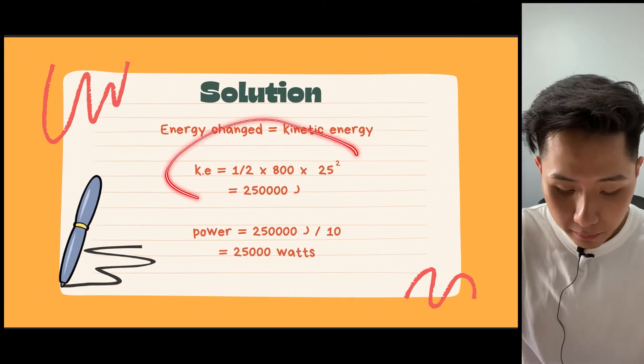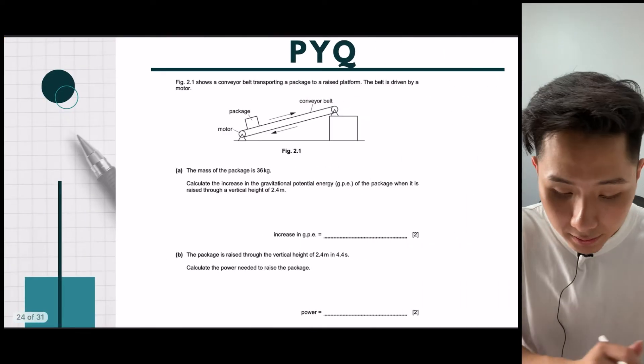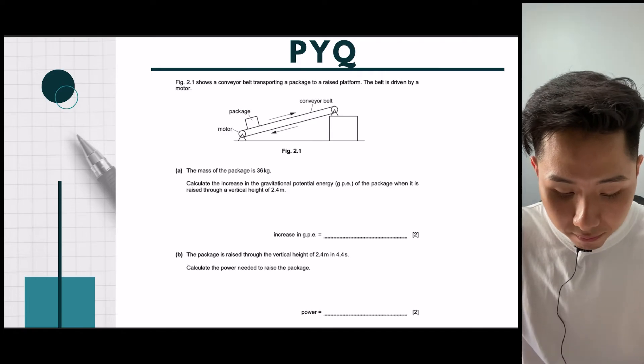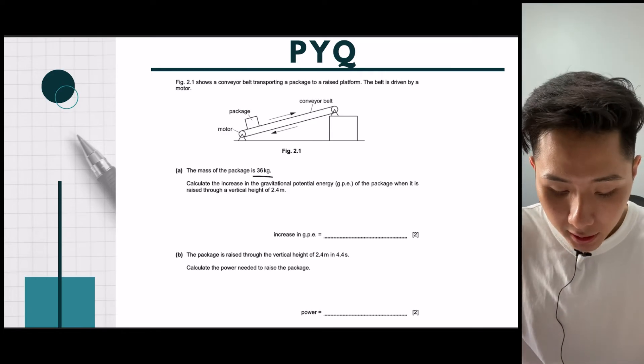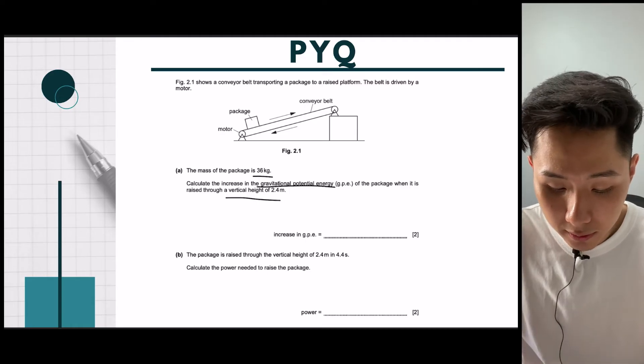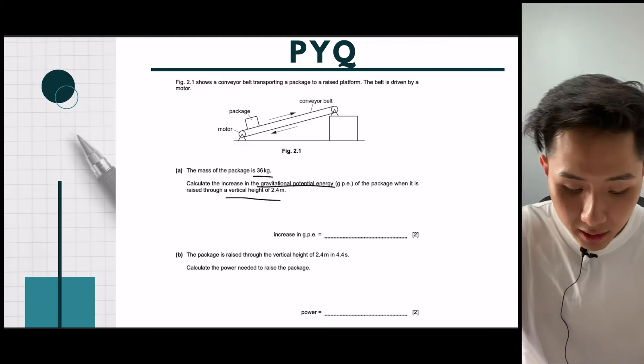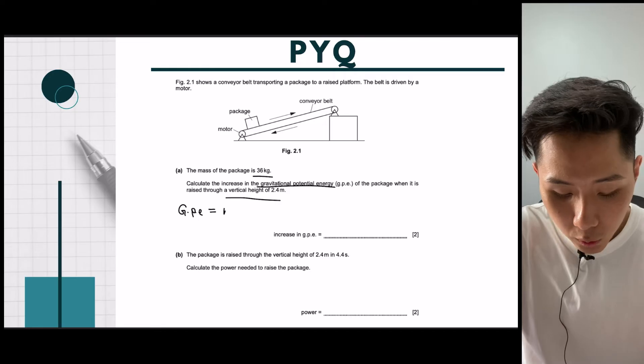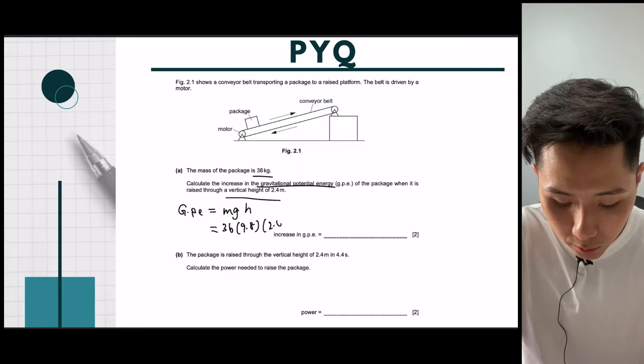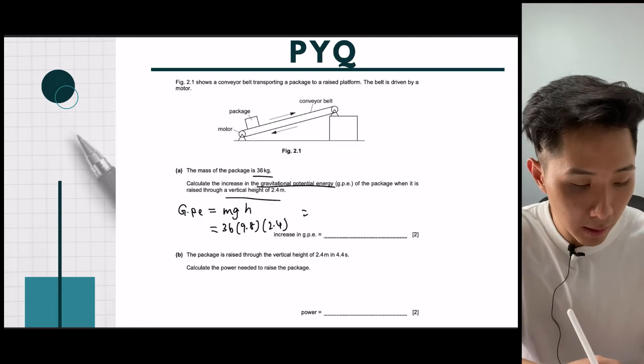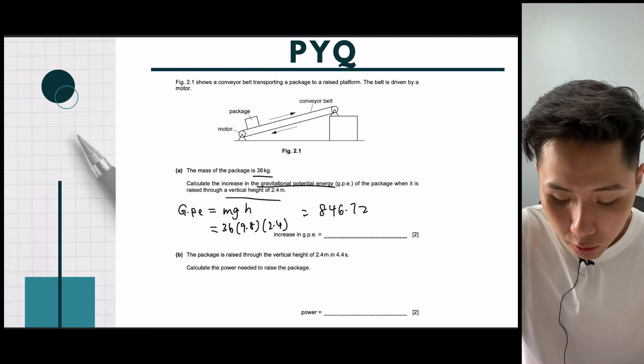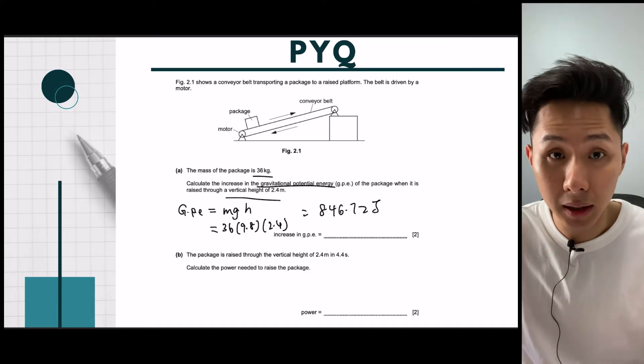So that's the answer. If you look at it, that's kinetic energy and also power. Great. So let's look into some of the past paper questions to help you fully understand the concept. The mass of the package is 36 kg. Calculate the increase in GPE when it is raised to a vertical height of 2.4. And this question is easy. Just do GPE equal to mgh. And mass is 36, g is 9.8, and height is 2.4. And when I plug every value into the calculator, I'll get 846.72 Joules. And that's the unit for energy.